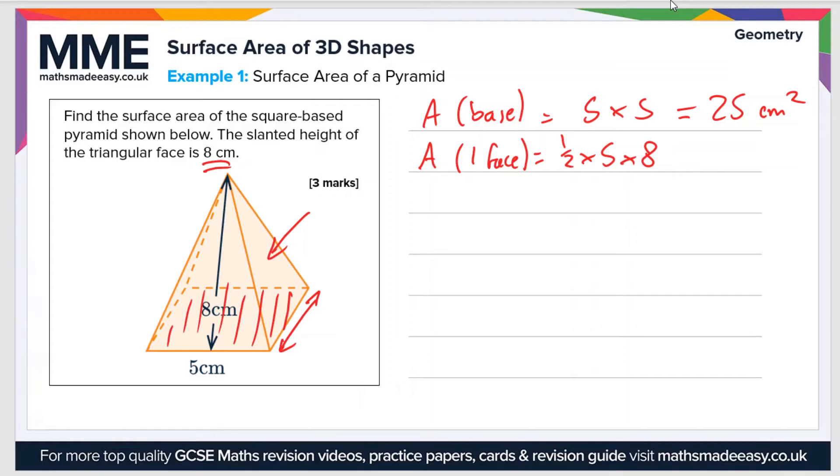So a half times five times eight gives us 20 centimeters squared. And then all we do now is we multiply this value by four, seeing as though there are one, two, three, four faces. So four times 20 equals 80 centimeters squared. So that's the area of all four faces.